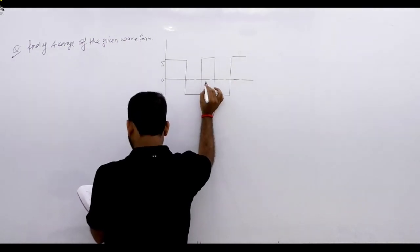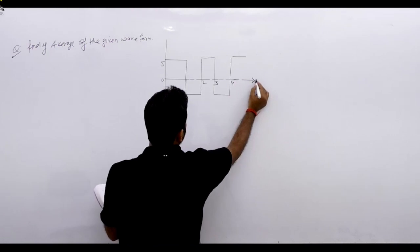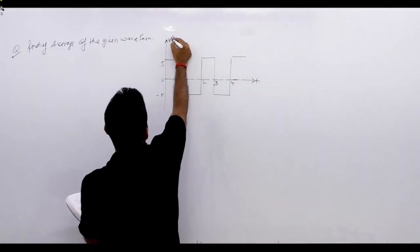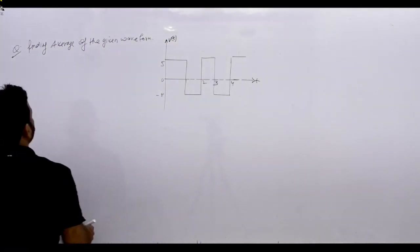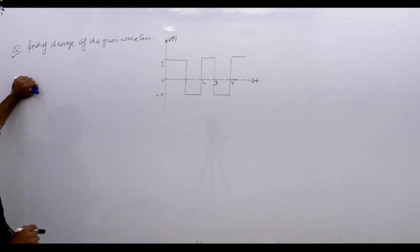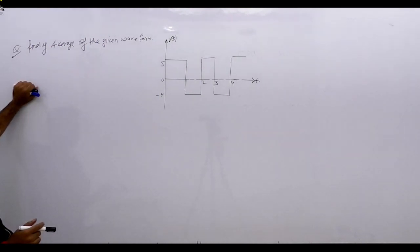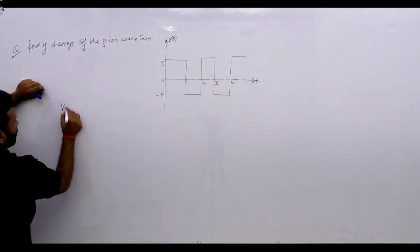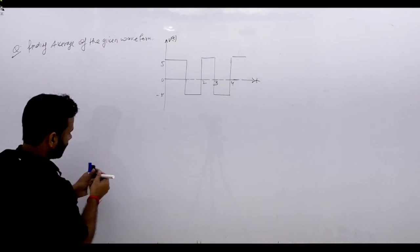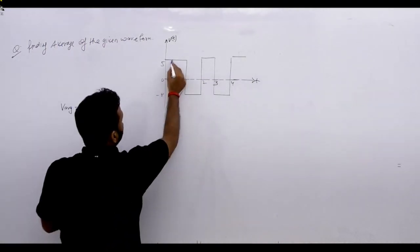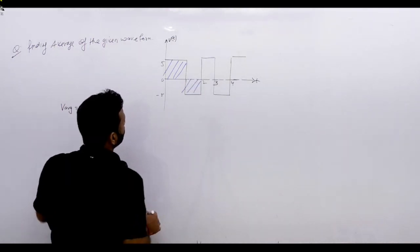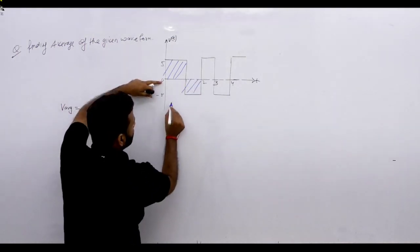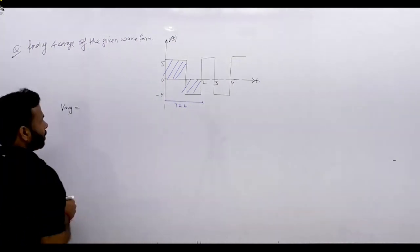The x-axis is T with values 1, 2, 3, and 4T, and the y-axis is BT. For this waveform we have to find the average. If your waveform is triangular, square, or rectangular, it is better to calculate the average using the area method. So average equals area divided by total time period, which is 2.